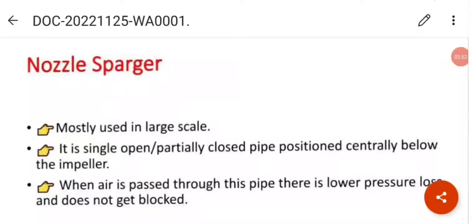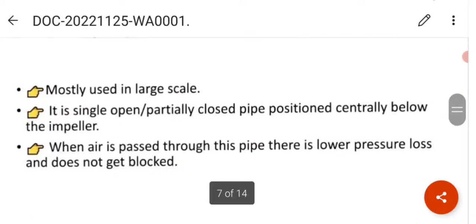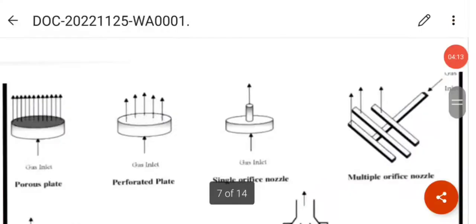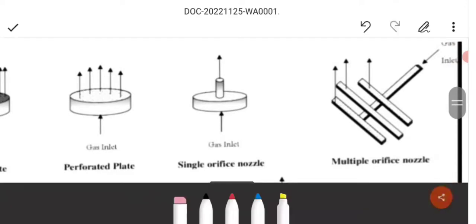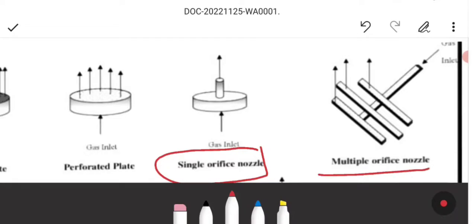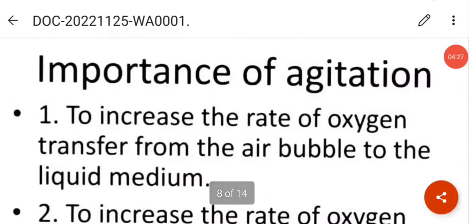The next category is the nozzle sparger. Nozzle sparger is mostly used in large scale industries and it is a single open or partially closed pipe positioned centrally below the impeller. When air is passed through this pipe, there is lower pressure loss and does not get blocked. Here you can see the single orifice nozzle and the multiple orifice nozzle sparger.